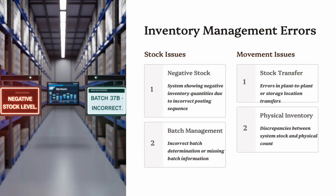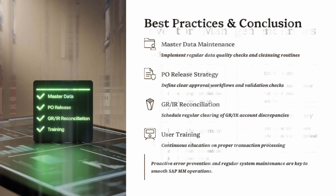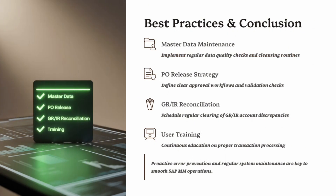Posting to the Wrong Stock Type — users sometimes post to blocked or quality inspection stock instead of unrestricted, which makes materials unavailable for use. Unmatched physical versus system stock — poor cycle counting or missed postings lead to discrepancies between actual warehouse stock and SAP records. To fix these: use cycle counting (MI01–MI04) to reconcile physical and system stock, train staff on movement types and stock categories, monitor negative stock reports and clear them promptly, and always validate batch/serial numbers during goods movement. A clean inventory equals accurate reporting, smooth production, and satisfied auditors.